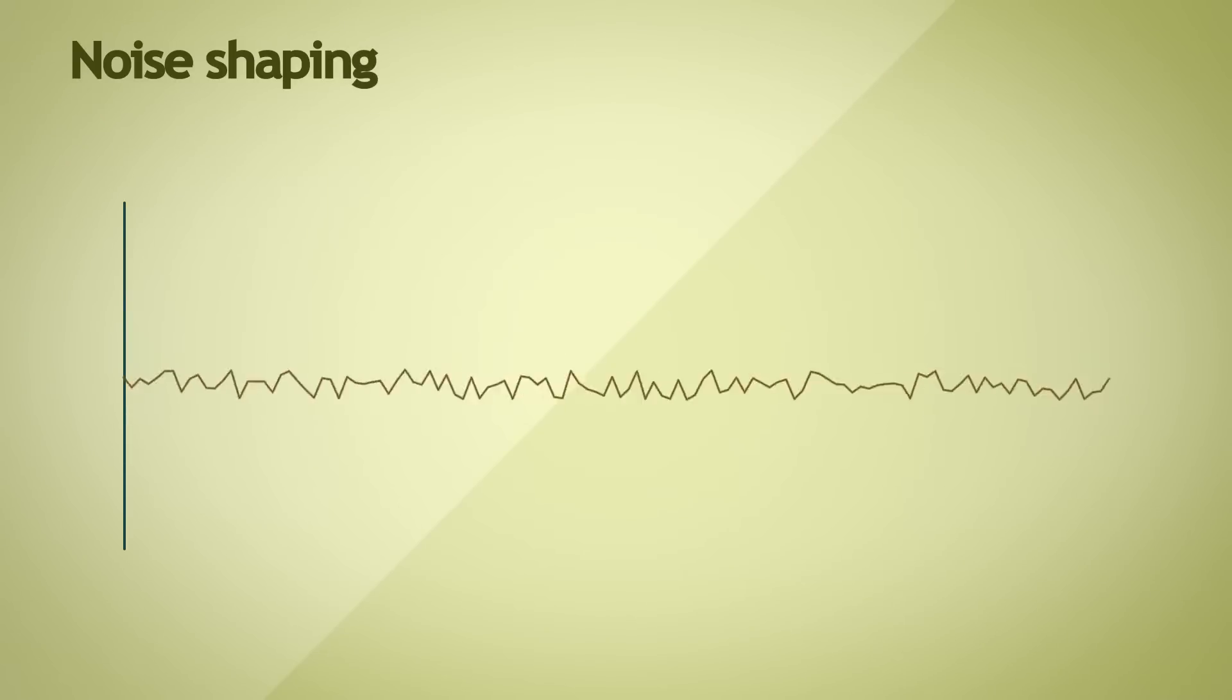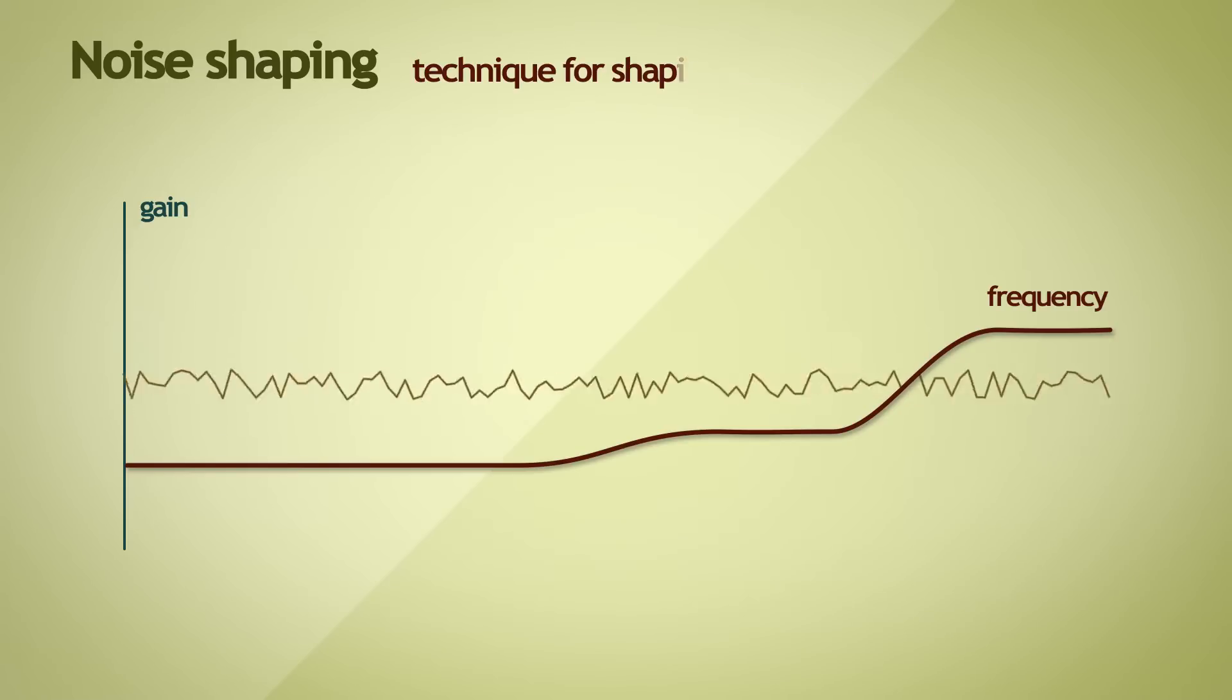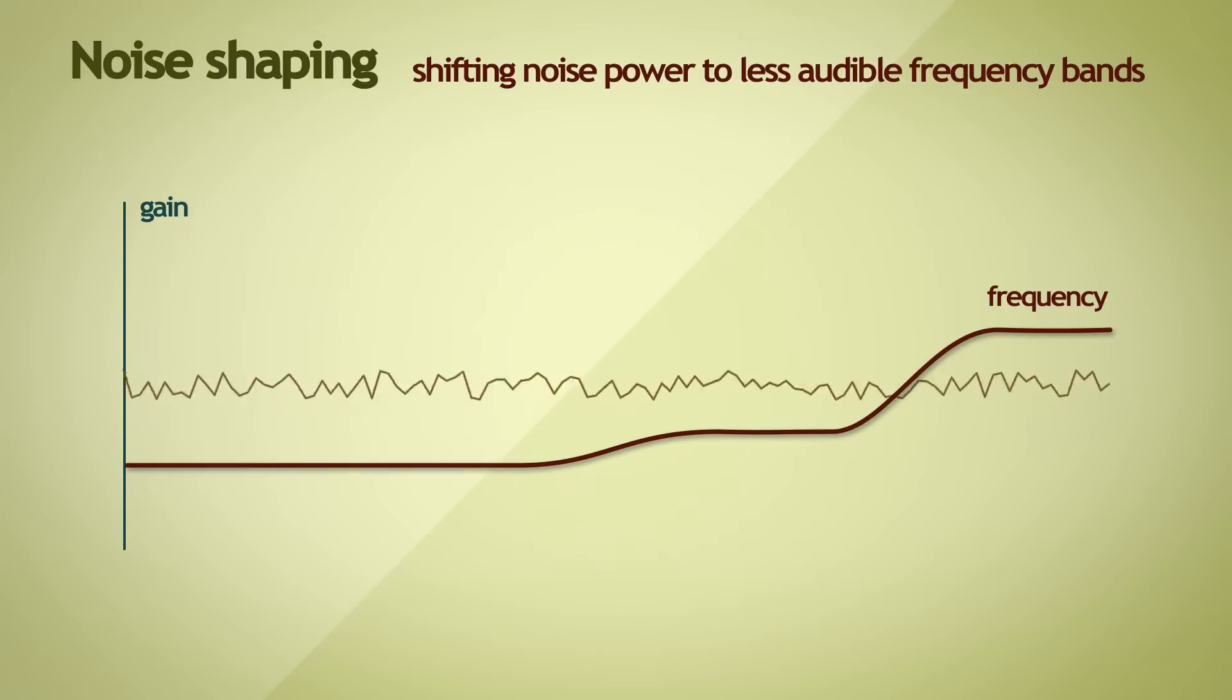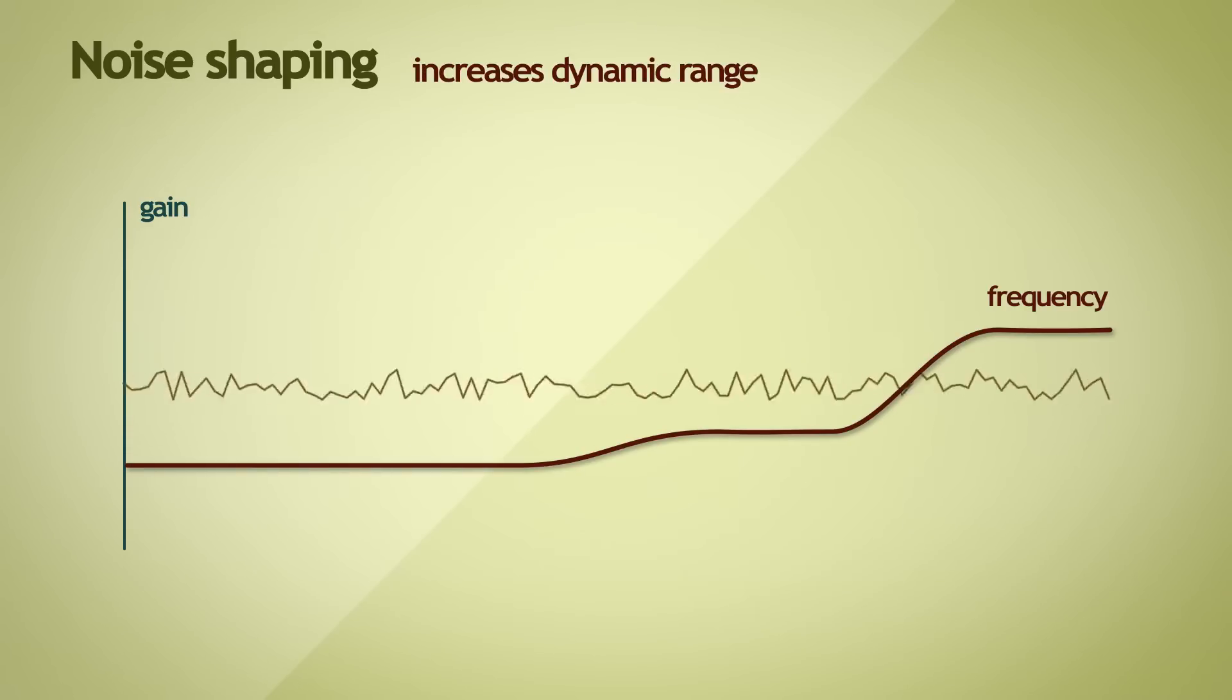Noise shaping, as the name suggests, is a technique for shaping white noise and manipulating how the noise power is spread across different frequency bands. It's not lowering the noise, but rather shifting the noise to higher frequencies to make the noise less apparent and less audible, and thereby increase the effective dynamic range that's available.